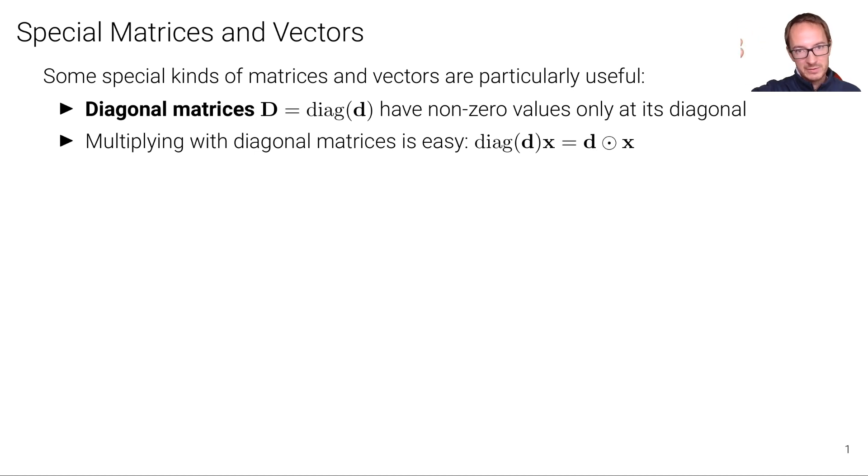So we take the first element of d, multiply it with the first element of x. We take the second element of d, multiply it with the second element of x, and so forth.